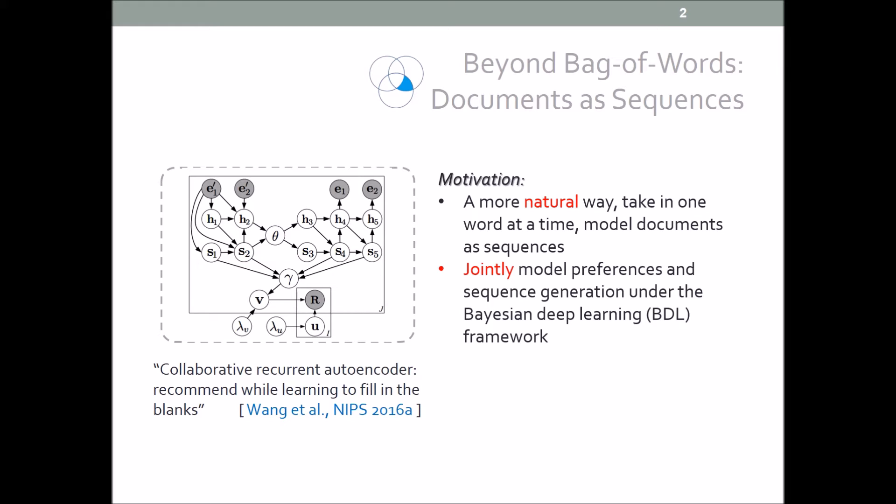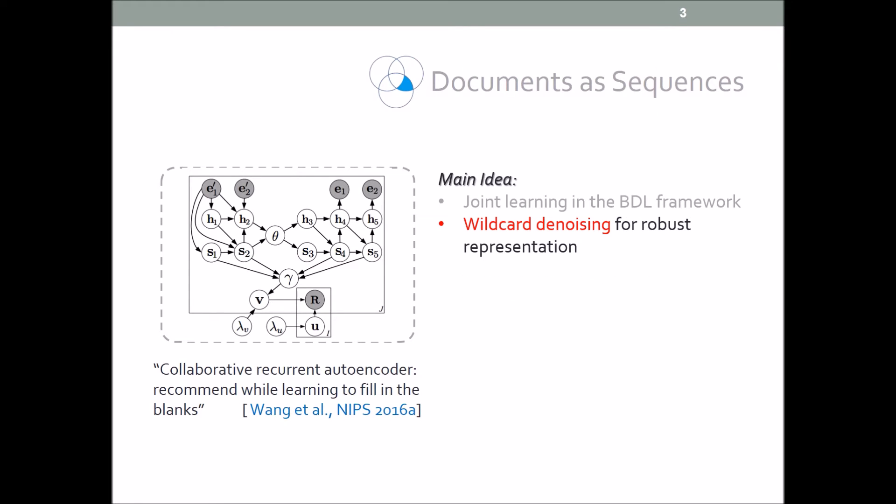We would like to jointly model preferences and sequence generation under the Bayesian deep learning framework. Besides joint learning, we propose to use wildcard denoising to learn more robust representation.